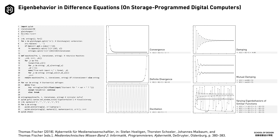This is a small interpreter for difference equations in Python code to be run on a digital computer. It takes difference equations and shows how these express recognizable forms such as convergence, divergence, oscillation, damping, mutual damping, and also erratic unpredictable behaviors that are characteristic and recognizable for an onlooking observer — always having elements that change but also elements that are conserved in those systems.